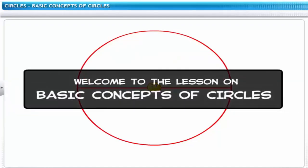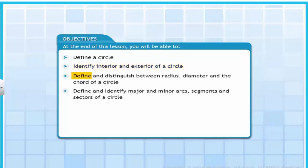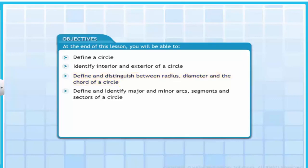Welcome to the lesson on basic concepts of circles. At the end of this lesson, you will be able to define a circle and identify the interior and exterior of a circle. You will be able to define and distinguish between the radius, the diameter, and the chord of a circle. You will also be able to define and identify major and minor arcs, segments, and sectors of a circle.